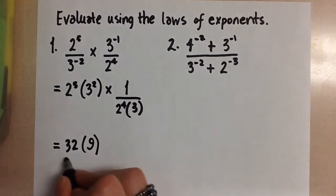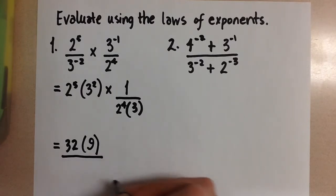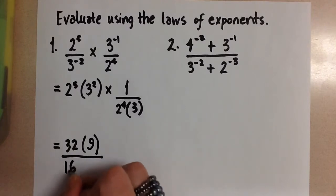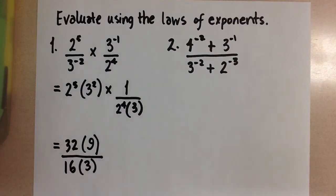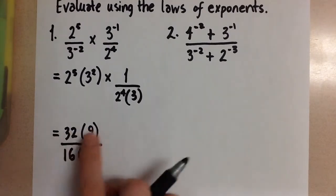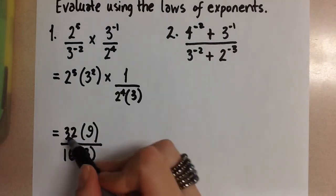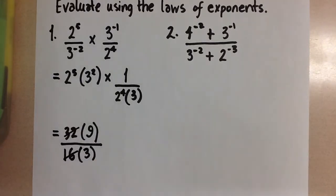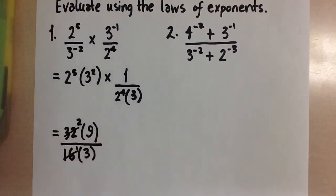But we can do some canceling here before we actually multiply and do the dividing. And I think that we should because it will make things a lot simpler for us. So the 32 can cancel with the 16 and we would get 2 in the numerator and a 1 in the denominator.